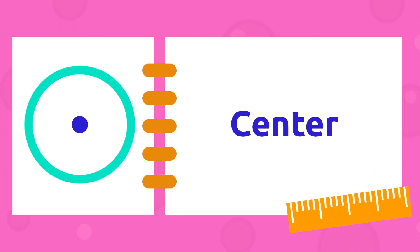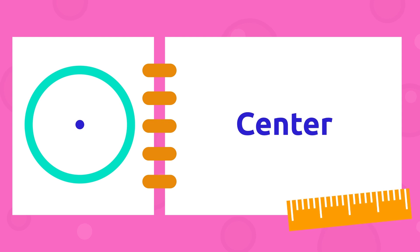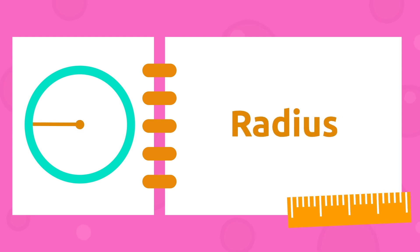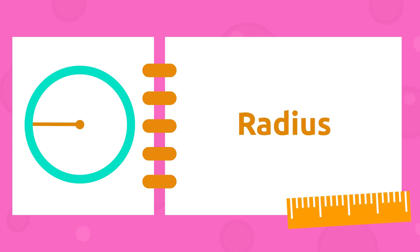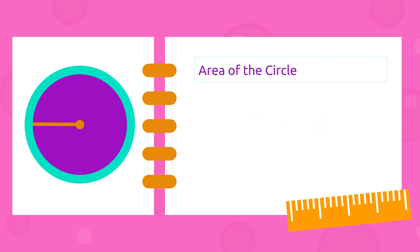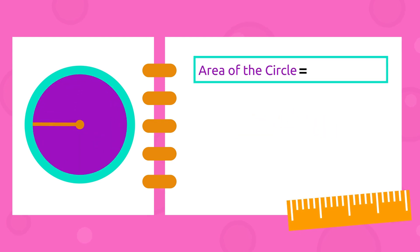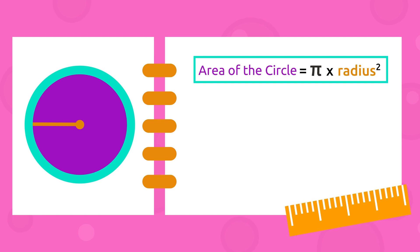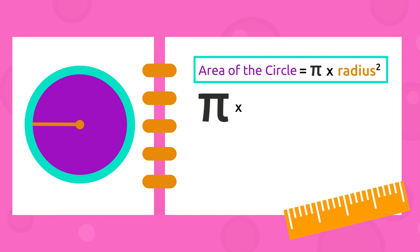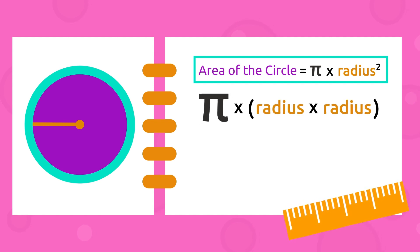First off, let's recap some parts of the circle. Here is the center, and this is the radius. To find the area of the circle, we multiply pi by the radius squared — meaning we multiply pi by the radius multiplied by itself.